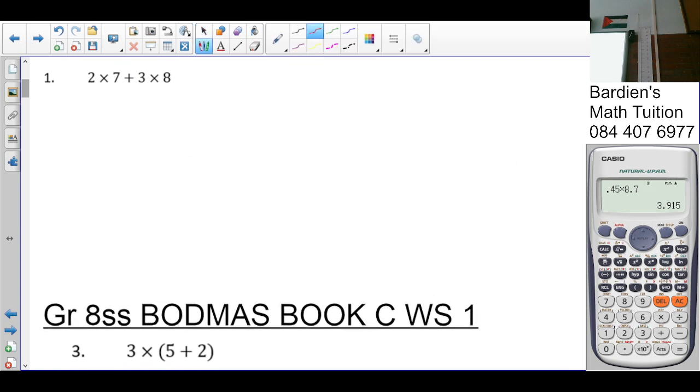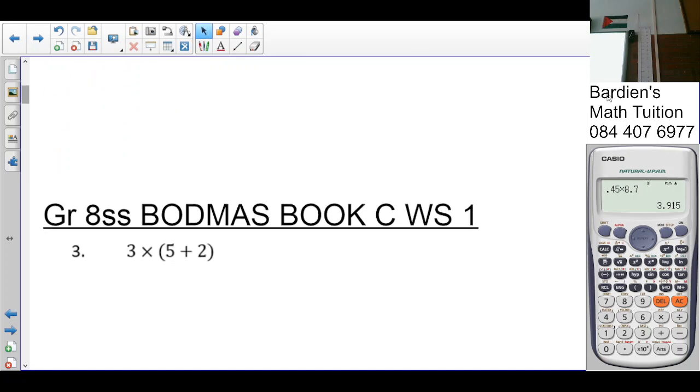So where do I start here? The sum is 2 times 7 plus 3 times 8. Where do I start? Multiplication. So 2 times 7 is 14. Plus 3 times 8 is 24. 14 plus 24 is 38. Any issues there? No.